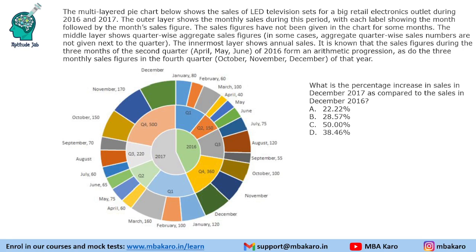The outer layer shows the monthly sales during this period, with each label showing the month followed by the month's sales figures. The sales figures have not been given in the chart for some months. You can see that for some months the values are given like January 80, February 60, however for some months the values are not given. The middle layer shows the quarter-wise aggregate sales figures.